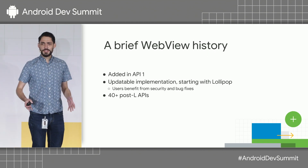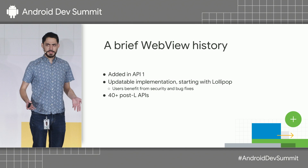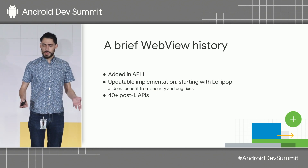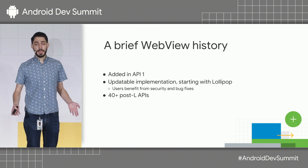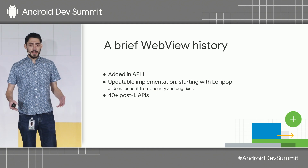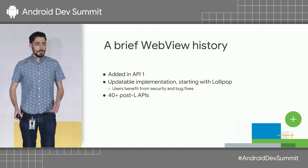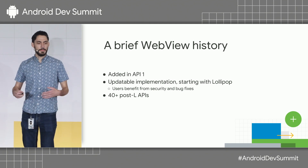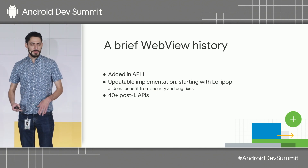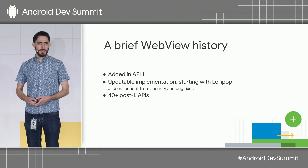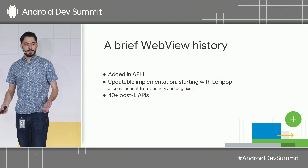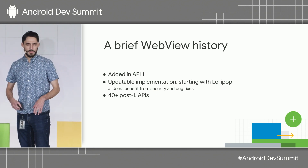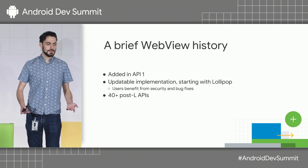Before I dive into what's modern with WebView, let's talk a little bit about what's old. WebView has been around since the very beginning — it was added back in API level one — and it changed in a significant way starting with Lollipop. It became updatable, which meant that users could benefit from security fixes and bug fixes, updating every six weeks, just like your browser.